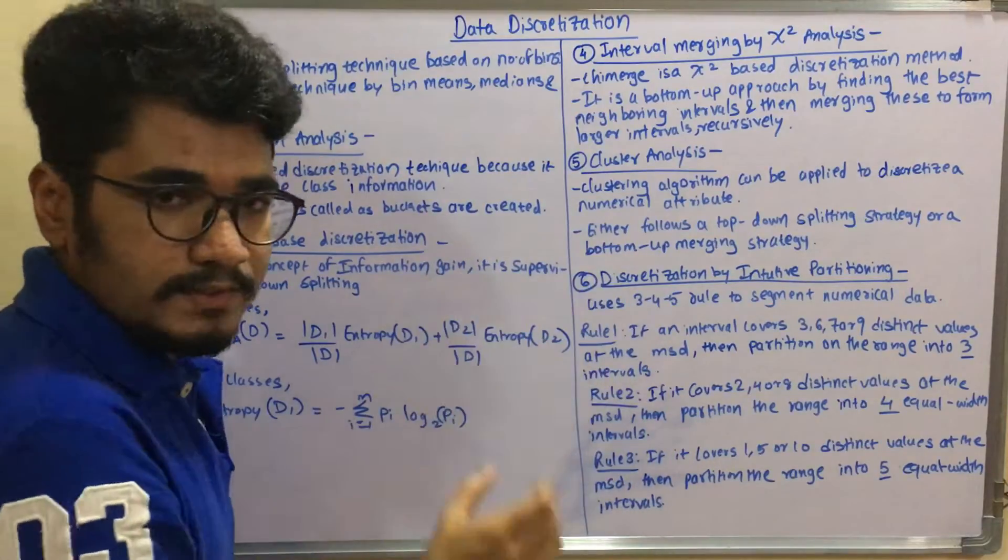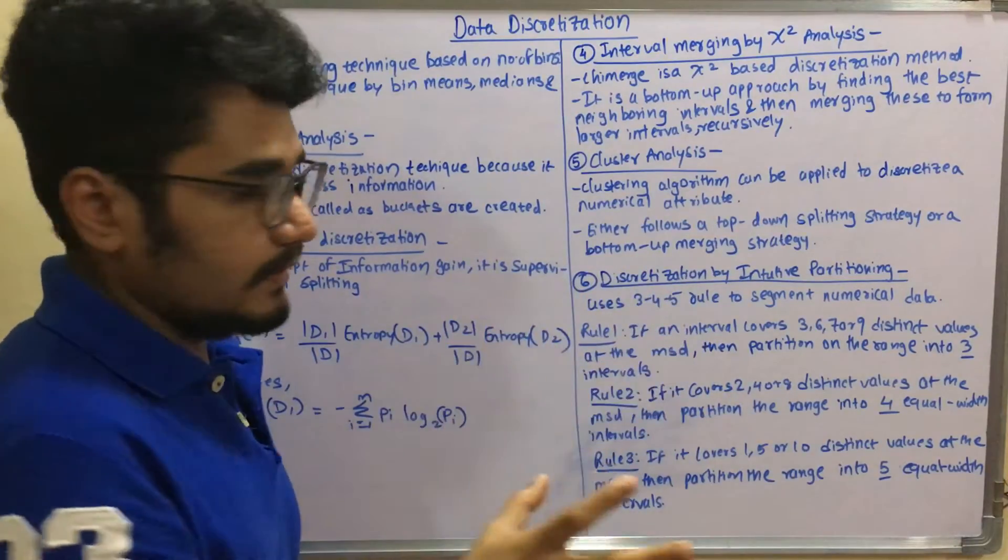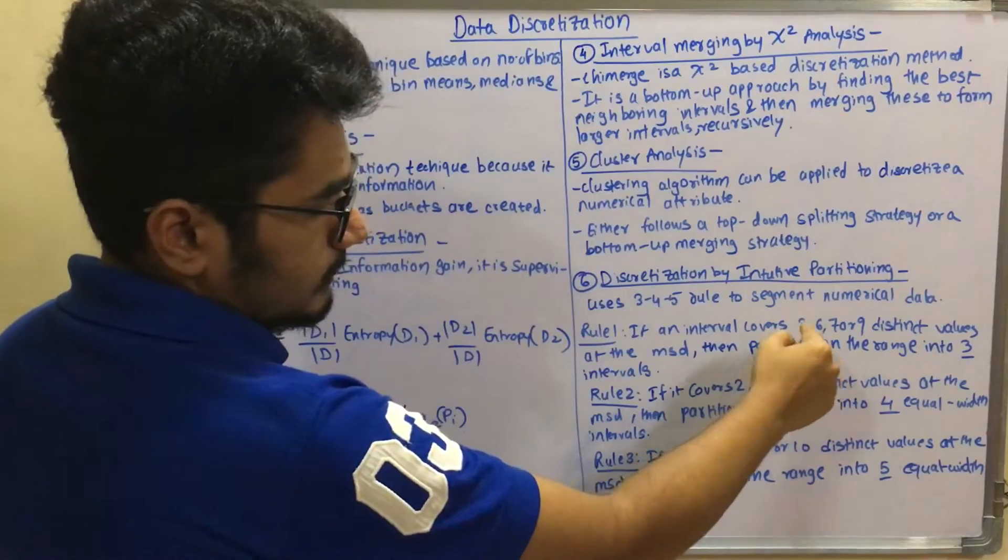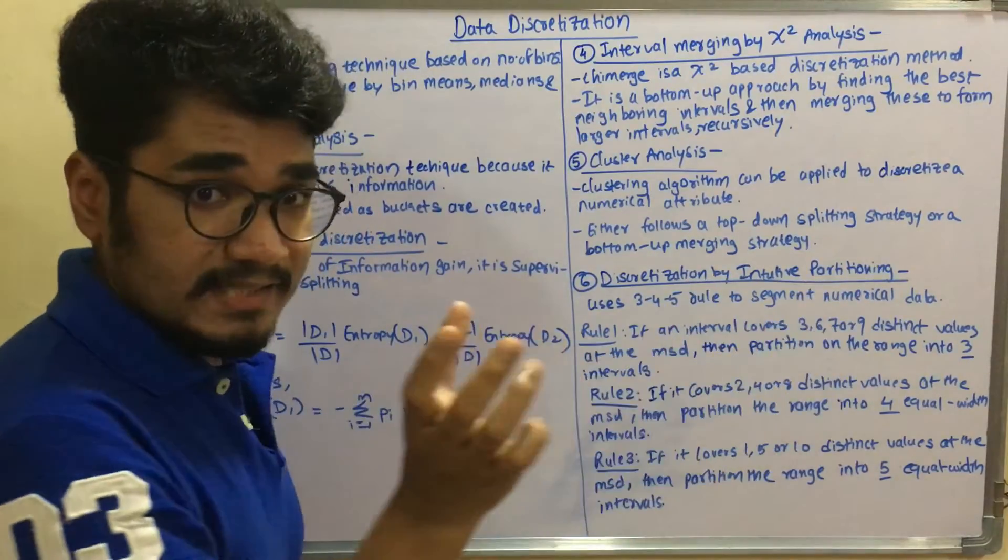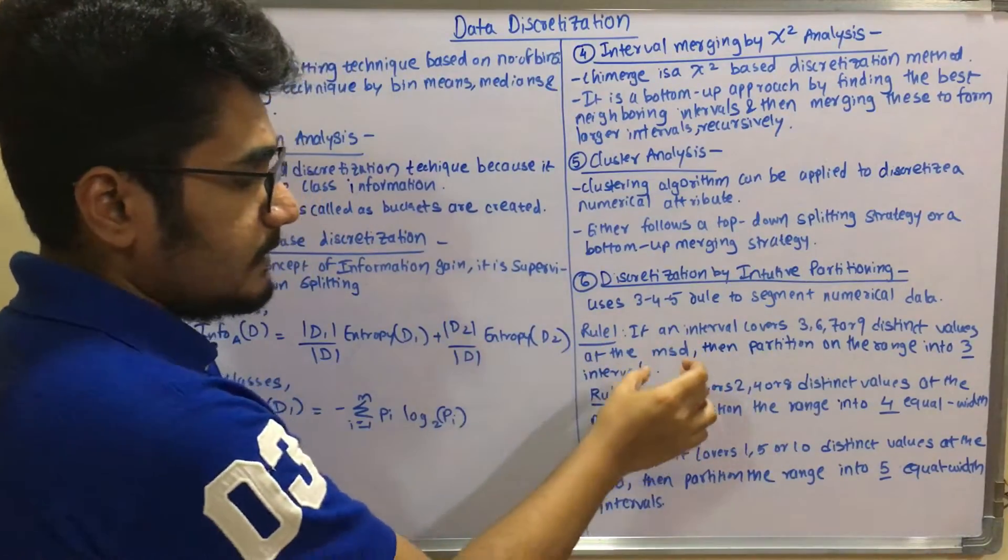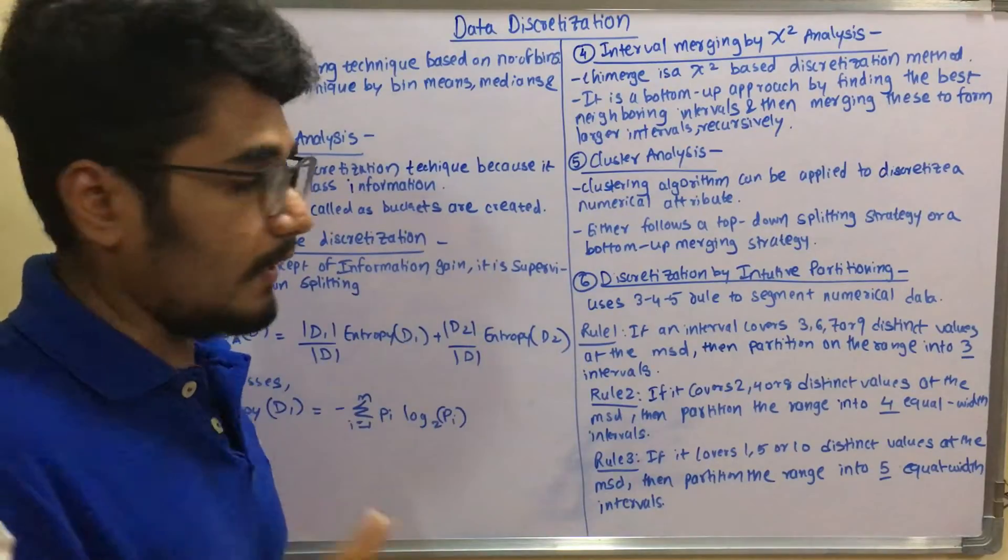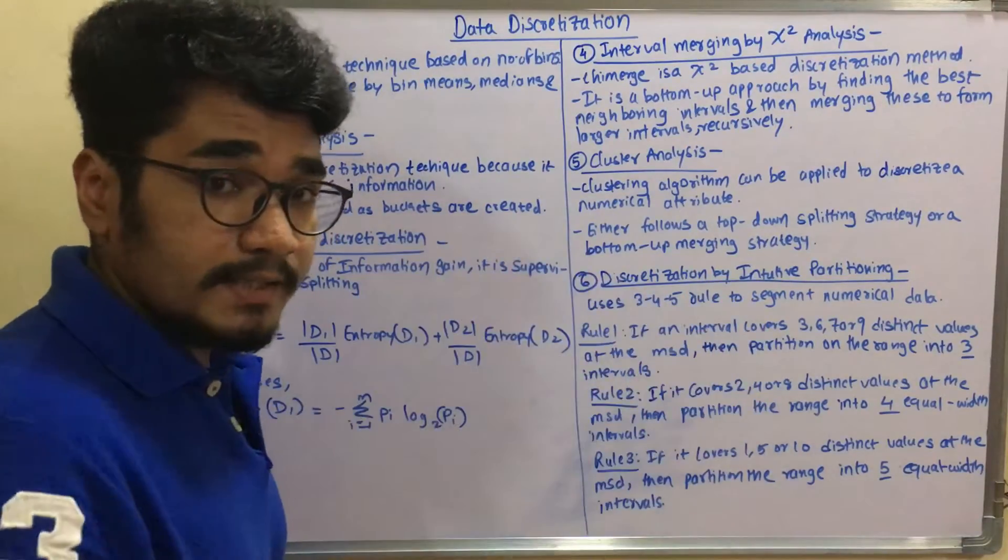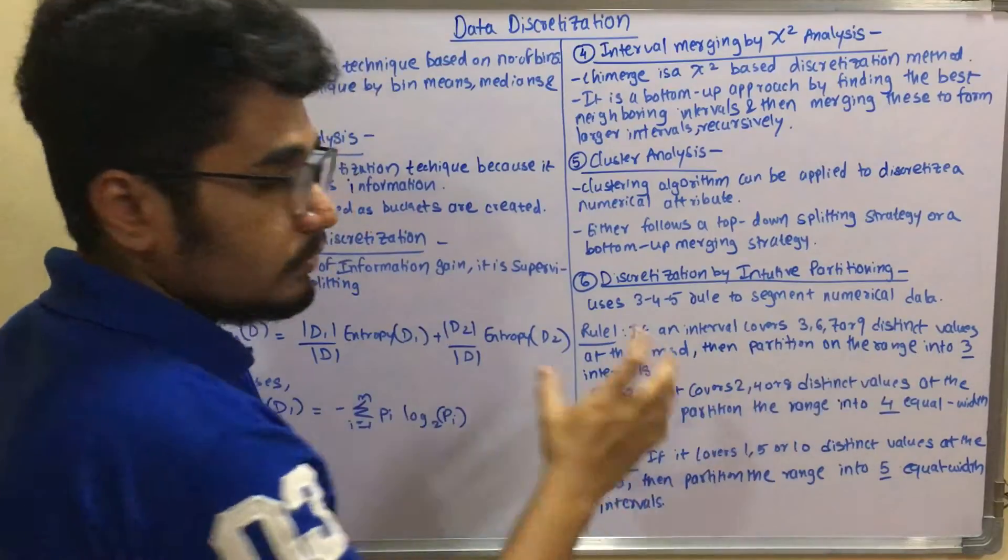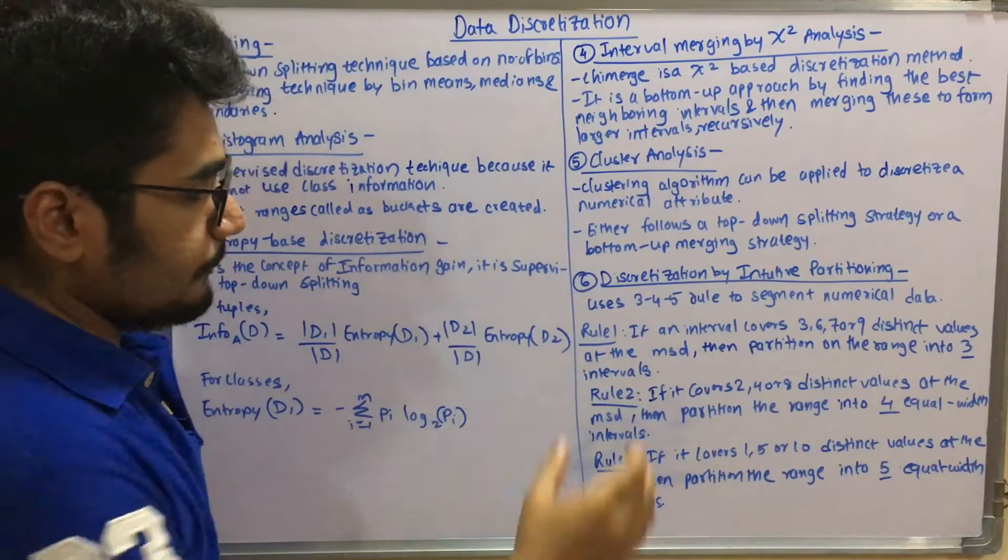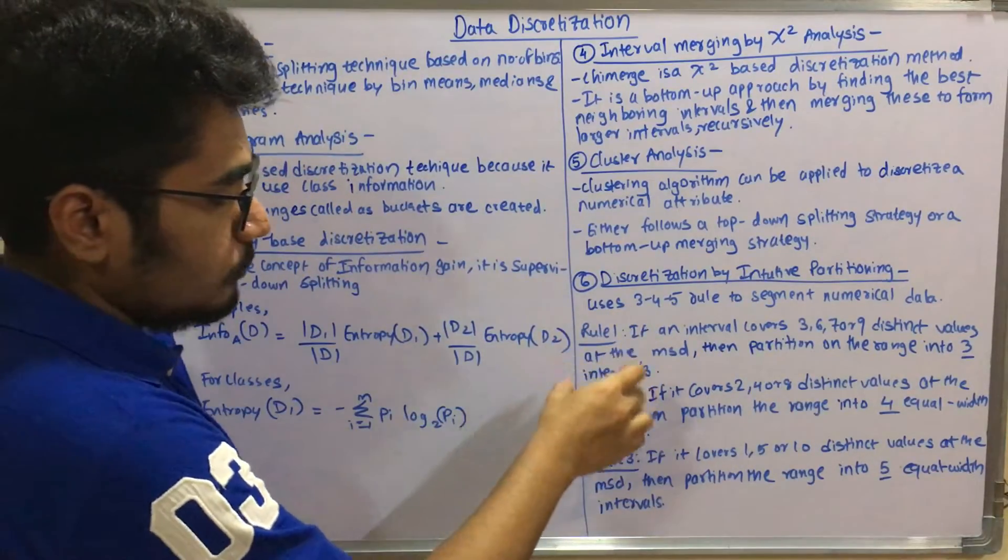Rule one says if an interval covers three, six, seven, or nine distinct values at the MSD—MSD is the most significant digit in that particular value—then you have to partition that range into three different separate intervals.